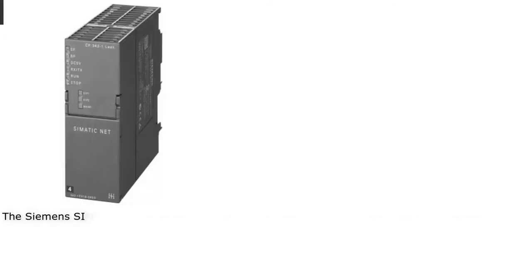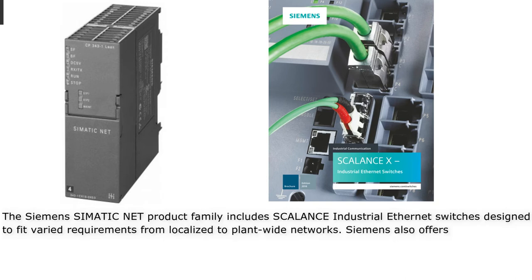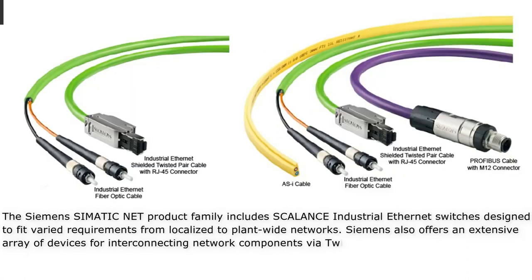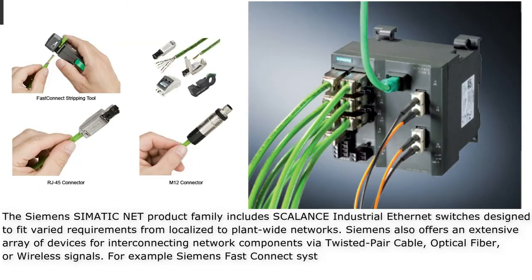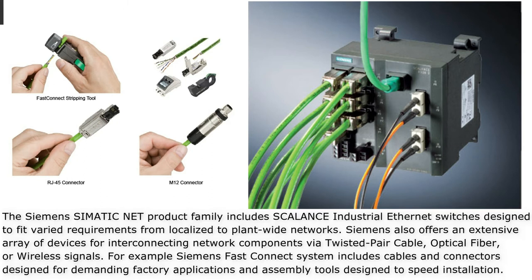The Siemens Simatic Net product family includes Scalance Industrial Ethernet switches designed to fit varied requirements from localized to plant-wide networks. Siemens also offers an extensive array of devices for interconnecting network components via twisted pair cable, optical fiber, or wireless signals. For example, the Siemens Fast Connect system includes cables and connectors designed for demanding factory applications and assembly tools designed to speed installation.